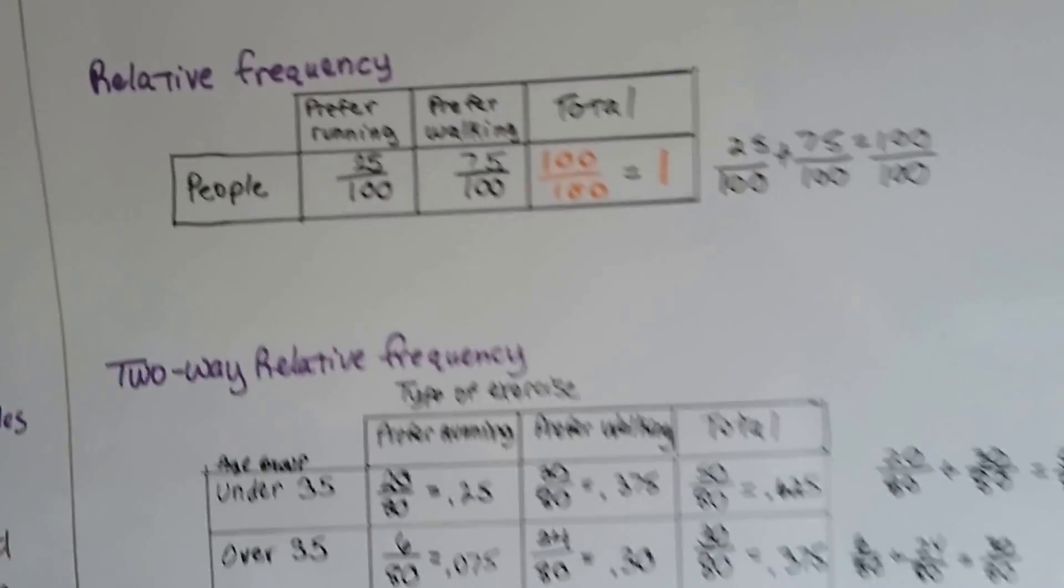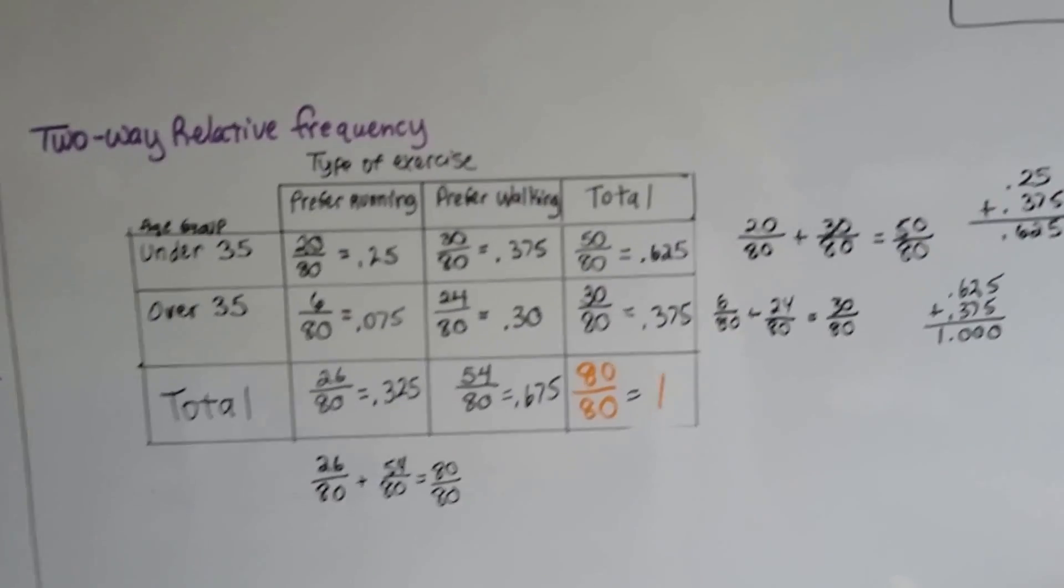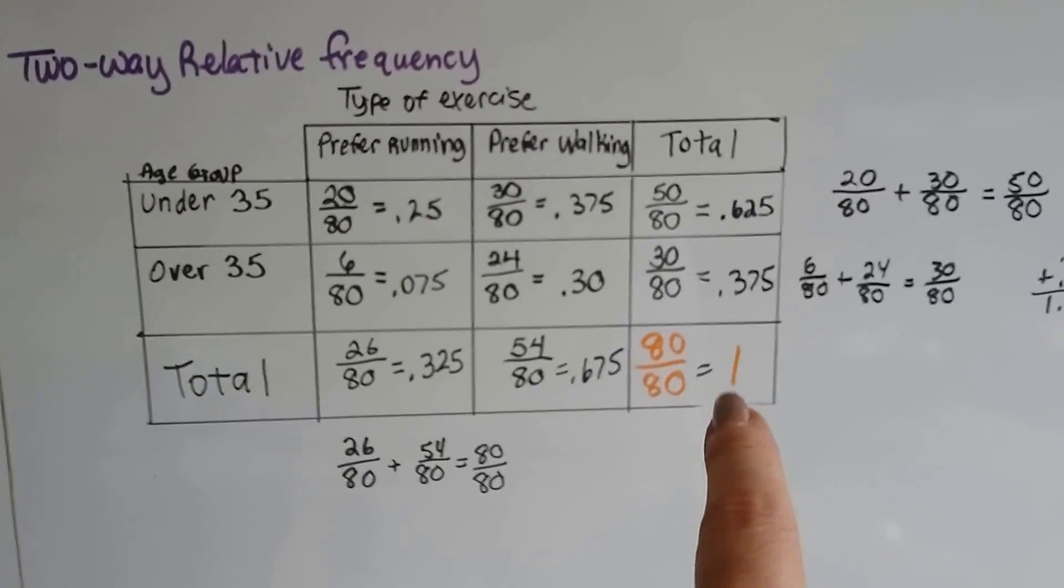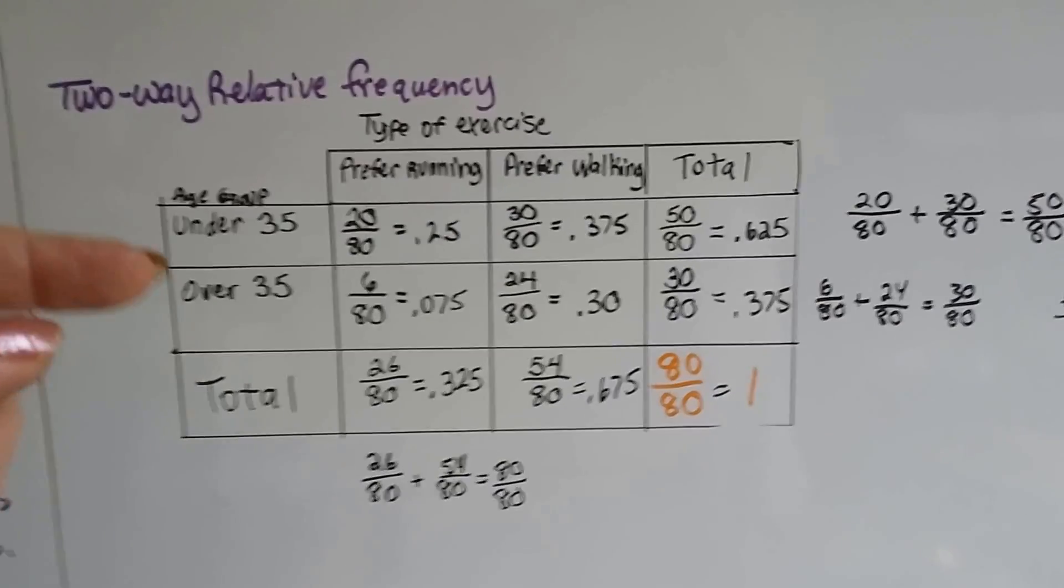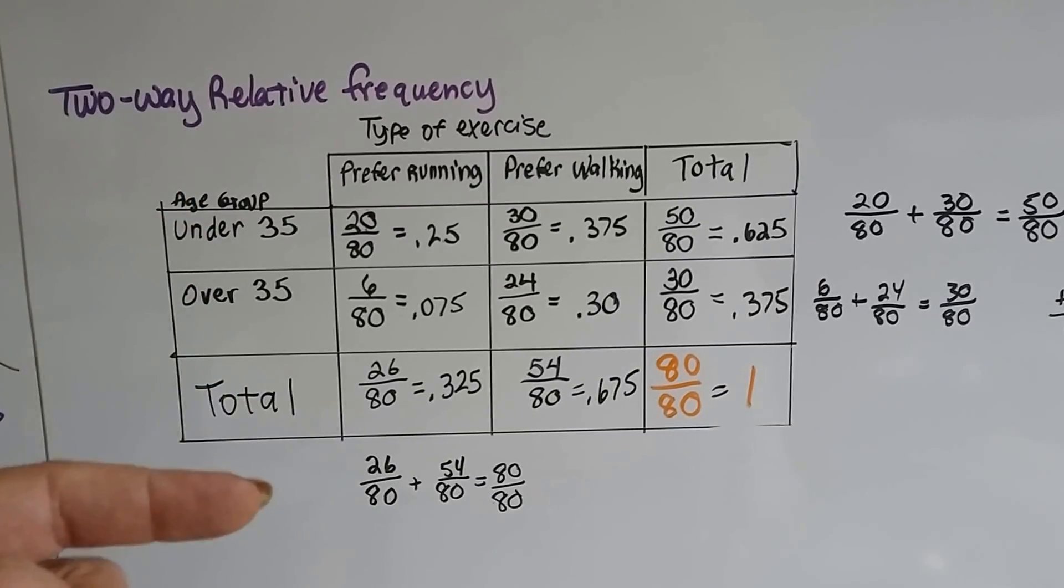If we have a two-way relative frequency table, this bottom corner is where we're going to see our 100% or our 1. So now, instead of just having people, we split it into age groups.